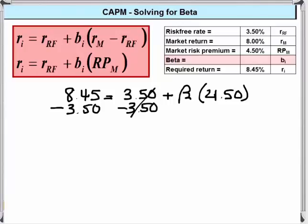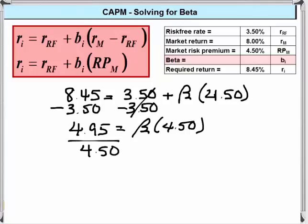That leaves us with 4.95 is equal to beta times 4.50. Divide both sides by 4.50, and the result beta is equal to 1.10.